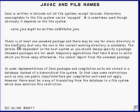There is at least one unnamed package in the system — that's a requirement. There may in fact be more than one; there may be one for every directory in the hierarchy. But of course only the one in the current working directory is available. The details of this are dependent on the host system and on the particular compiler that you're using.